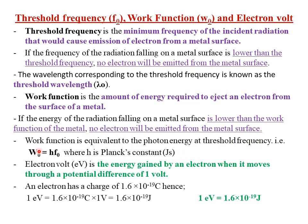Therefore, the work function W₀ equals H × F₀, that is, the Planck's constant H multiplied by the threshold frequency F₀. Since v = fλ, you can also derive a relationship between the work function and the threshold wavelength, as we shall see in our examples. Here, H represents the Planck's constant in joules per second.